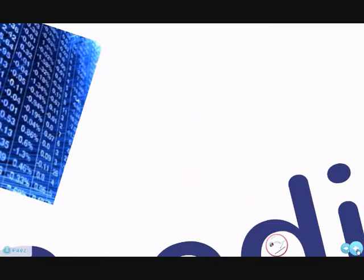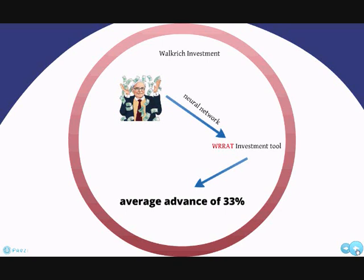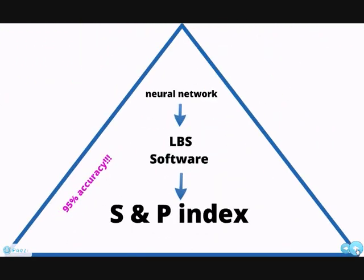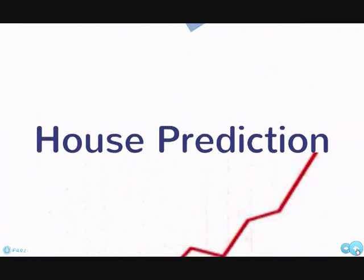In the stock market, within such a volatile climate, Workrich Investment successfully developed an investment portfolio which achieved an average advance of 33%. The secret to their success is that they created an investment tool, WRRAT, based on Warren Buffett's insights and theories. They entered variables that would potentially influence the value of stock or the entire market, used the neural network to deduce the result, and optimized their portfolio using that result. Additionally, the LBS software used neural network to predict the SLB index and achieved 95% accuracy.